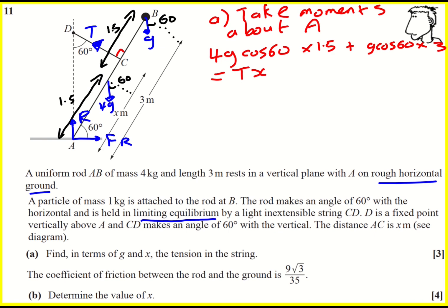So cos 60 is actually a half, and therefore we're going to get Tx is equal to 2G times 1.5, so 3G, plus 3 over 2, G. That's going to become 9 over 2, G.